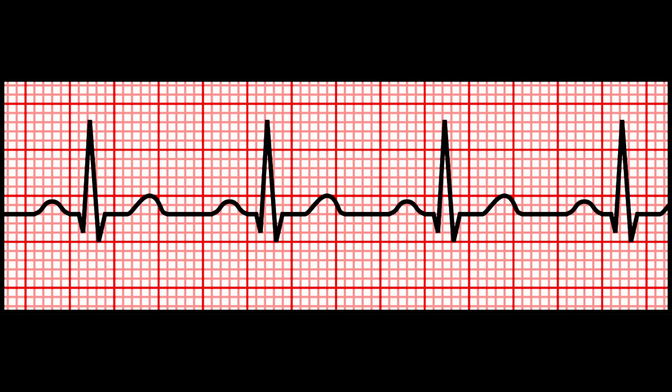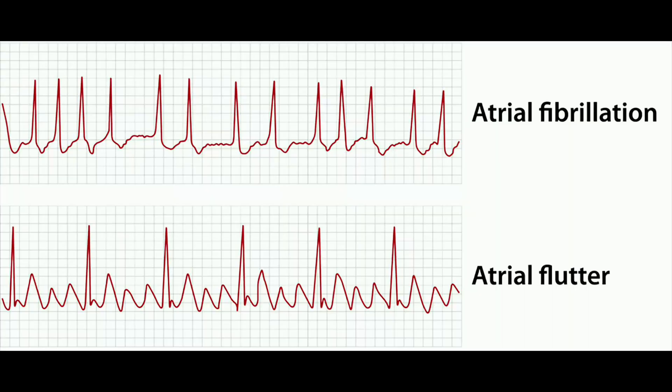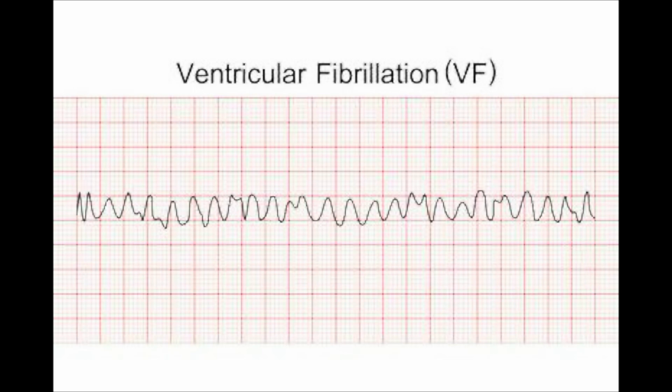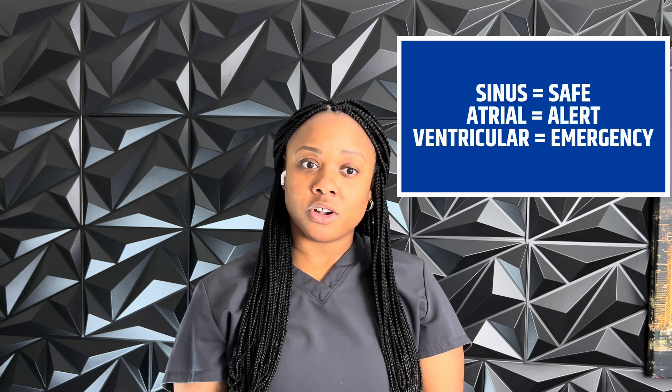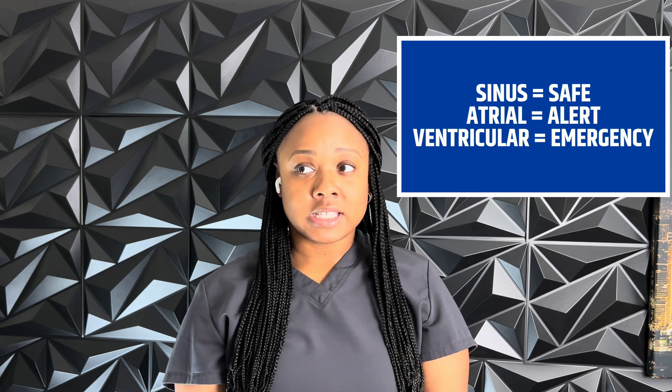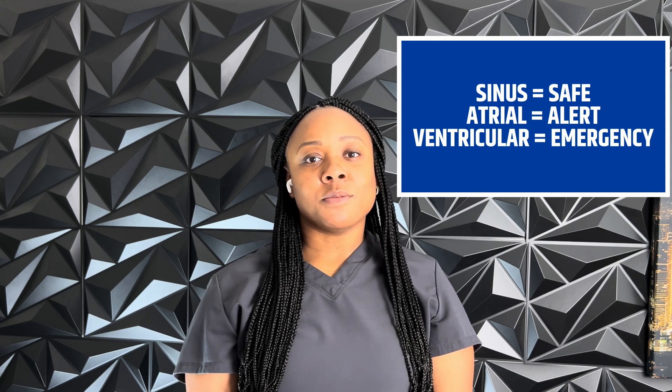Now let's talk about the three main rhythm types you'll see. Sinus rhythms start in the SA node and are usually your normal everyday rhythms. Atrial rhythms come from the top chambers but not the SA node — think atrial fibrillation or atrial flutter. Ventricular rhythms come from the bottom chambers and are usually the ones that make you stop what you're doing and call the nurse, like VTAC or VFib. Here's a quick cheat code: if you see sinus, think safe; if you see atrial, think alert; if you see ventricular, think emergency.